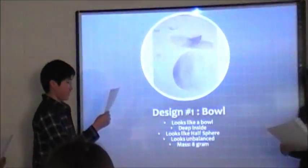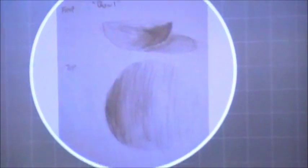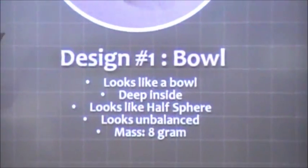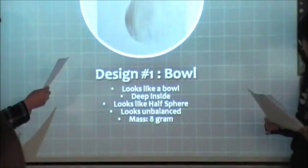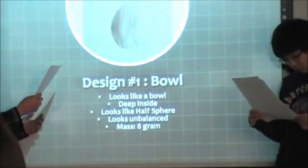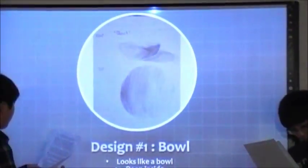Now, we are going to introduce our boat designs. First design model name is Ball because it looks like a ball. This model has a deep, wide space inside. It looks like half-sphere. It looks kind of unbalanced because the bottom of the boat is not flat. Its mass is 8 grams.